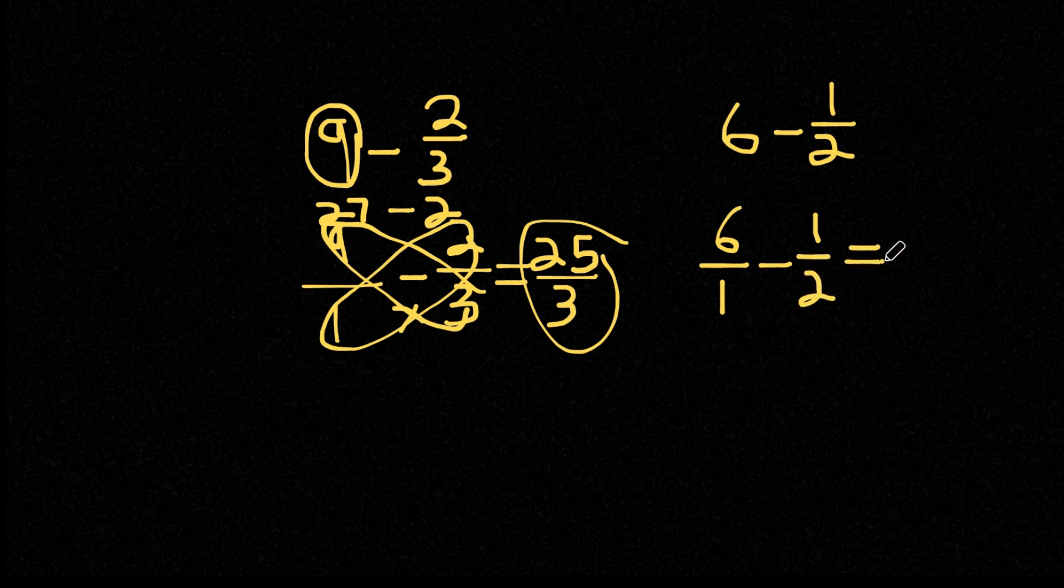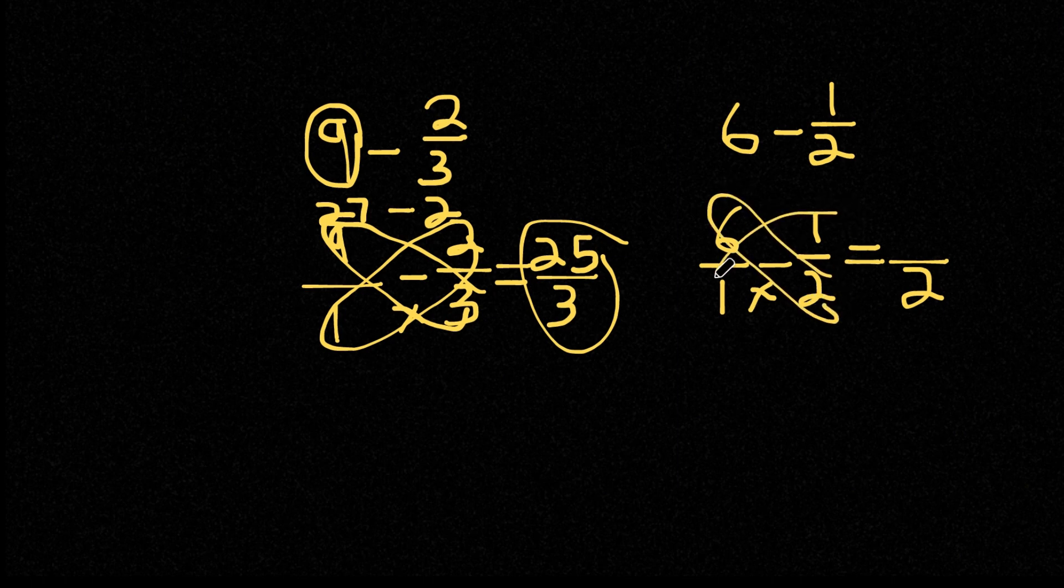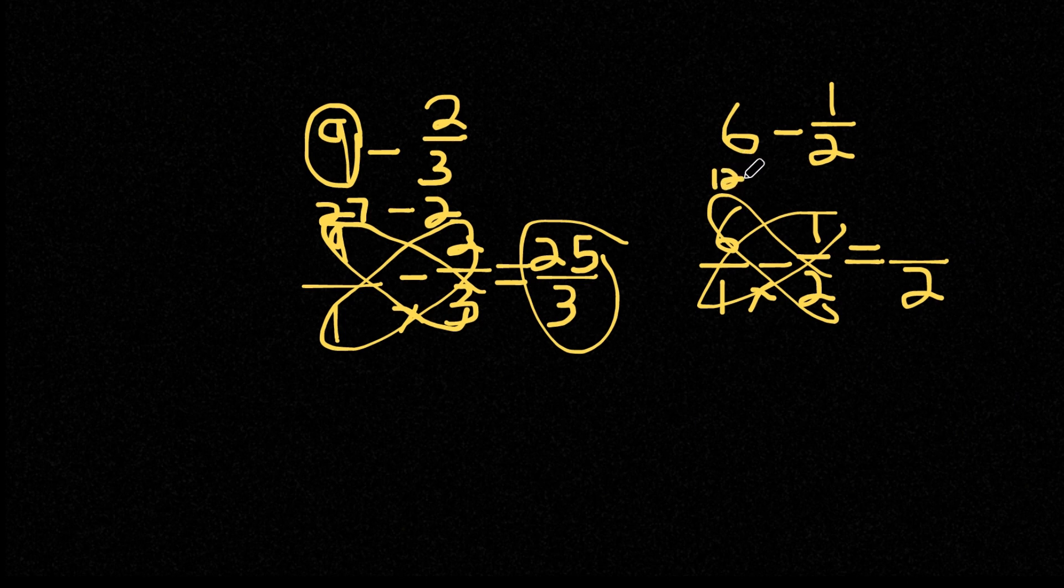And now remember, to do this problem, we're going to have to use cross multiplication. And let's first find our denominator. We're going to multiply our two denominators here. So 1 times 2, that is 2. And our numerator, we're going to cross multiply here. We're going to do 6 times 2 and 1 times 1. 6 times 2 is 12 minus 1 times 1 is 1. So we're left with 12 minus 1, which is 11, divided by 2. And this is our answer.